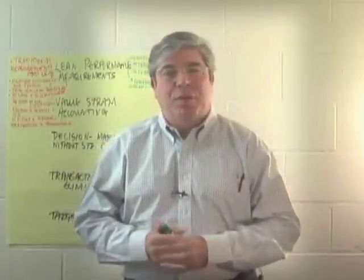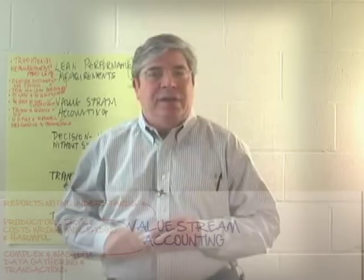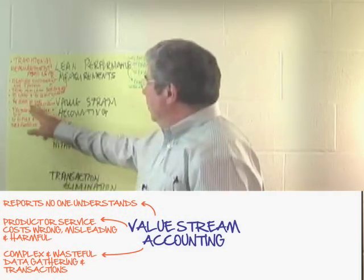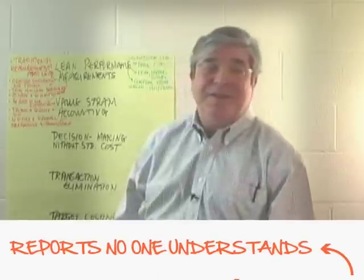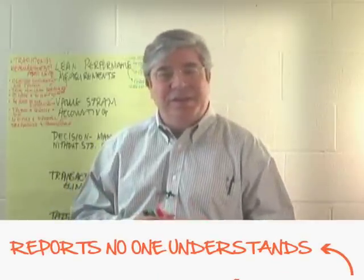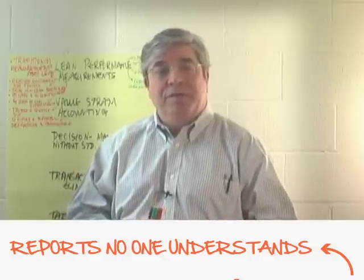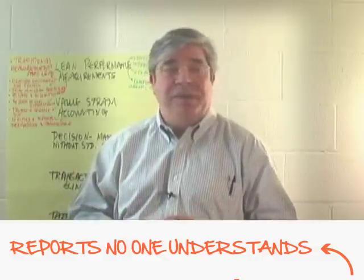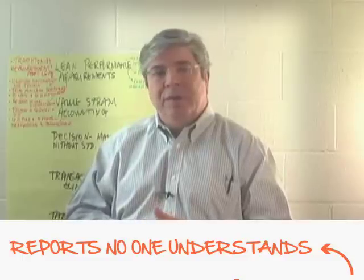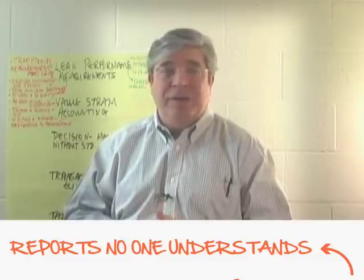I'd like to take a look at what are some of the problems of traditional accounting systems. We've only got a few minutes so we can't get to a huge amount of detail here, but the first is reports that nobody understands. When presenting lean accounting it's always good to have a cross-functional group, because very often the finance people have a clear picture of what the reports are, but they don't realize that most people in the company find this information a complete mystery.